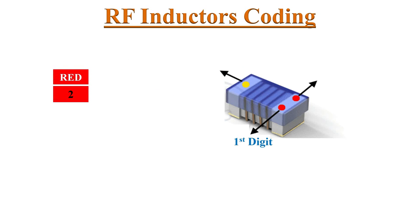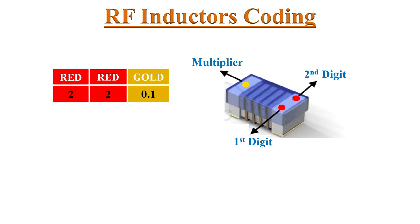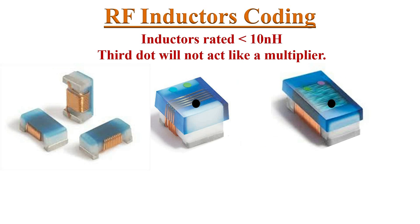For example, the first digit is red — its value is 2. The second digit is also red — its value is 2. The third digit on the other side is gold, which is the multiplier with a value of 0.1. Hence this inductor's inductance value is 2.2 nano-Henrys.